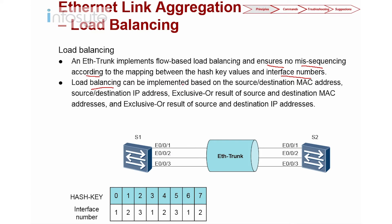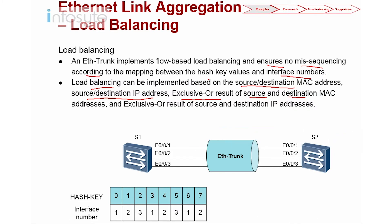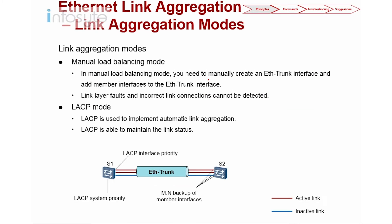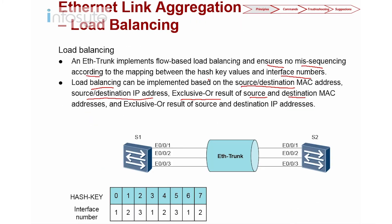Load balancing can be implemented based on source or destination MAC address, source or destination IP, or you can use the exclusive OR result of the source and destination. As shown in the animation, if the source MAC is 11:11:11, it goes to the first interface; if the source is 22:22:22, it goes to the second interface; 33:33:33 goes to the third interface, and so on — based on hash value and interface mapping.